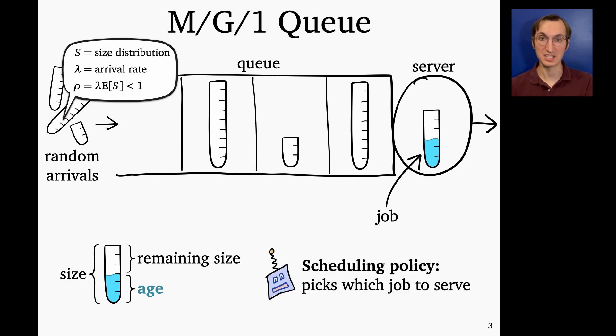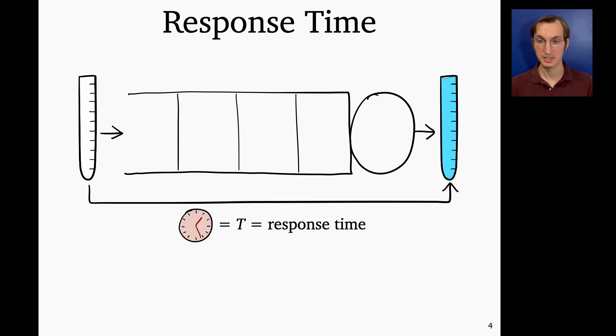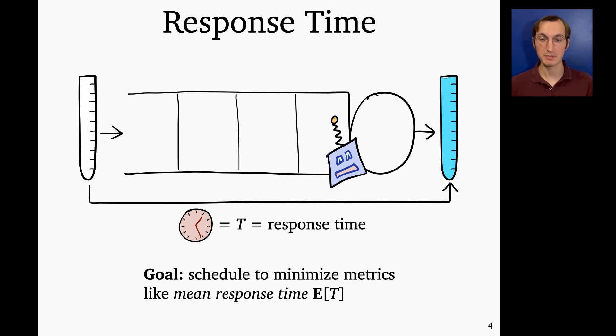And today what we're going to be concerned with is scheduling in the M/G/1. So the scheduling policy at every moment in time picks one job to serve, and it can do so preemptively. So we can decide to switch out one job and start serving another. And preemption has no penalty in our model. So the metric we're going to be concerned with is response time. So a job's response time is the time from when it first arrives to when it leaves all complete.